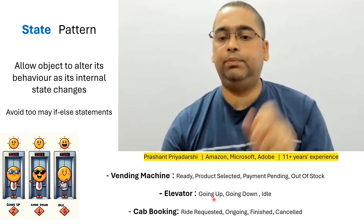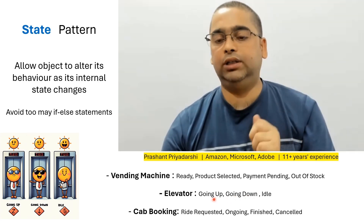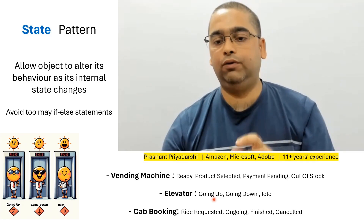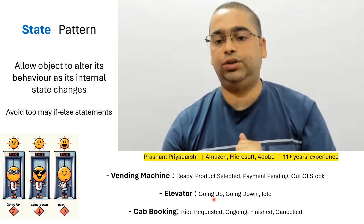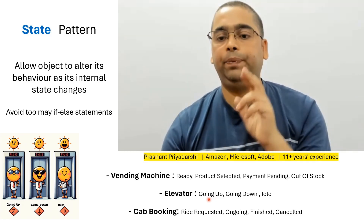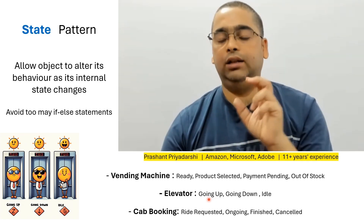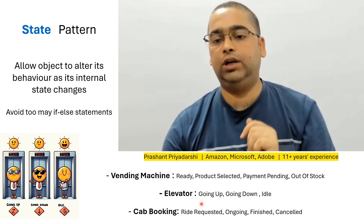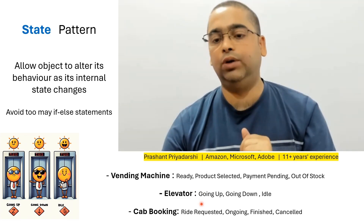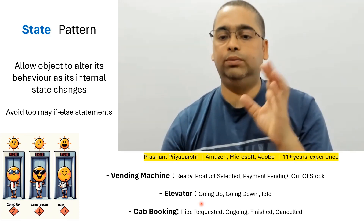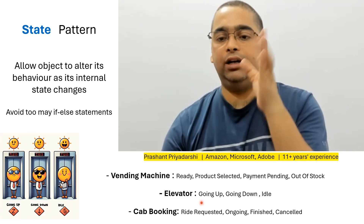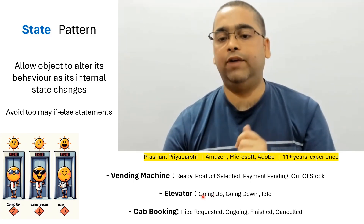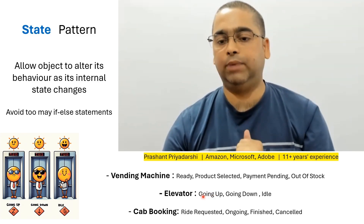A lift which is going up — suppose it is on floor 2 — the time taken to reach floor 4 will be 4 minus 2, that is 2 seconds. But if it was on floor 6, that lift has already passed floor 4 and is still going up, so it is an invalid lift for that request. It will simply return an invalid value like minus 1.